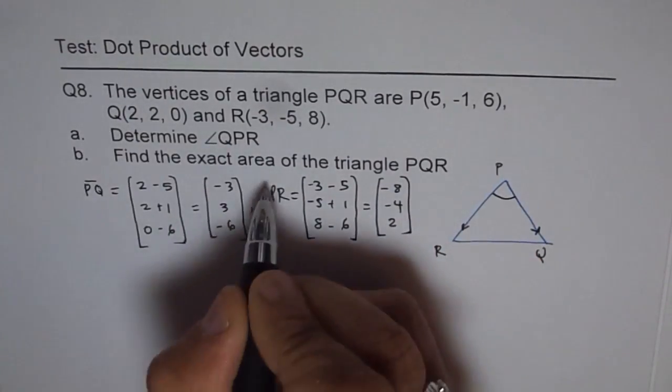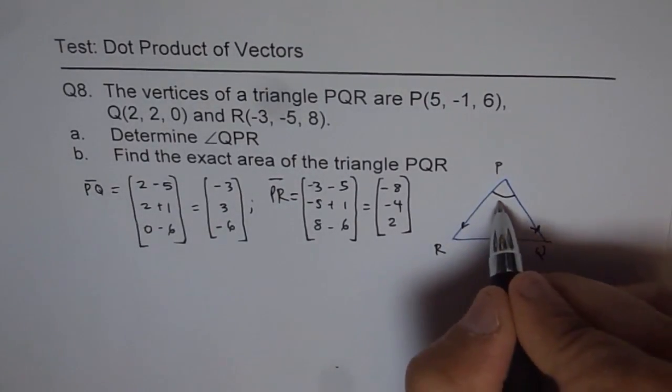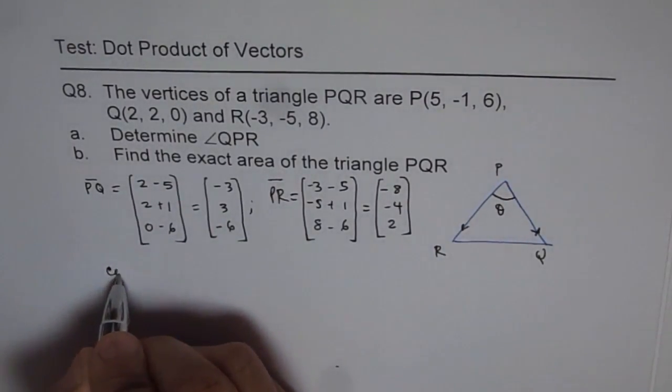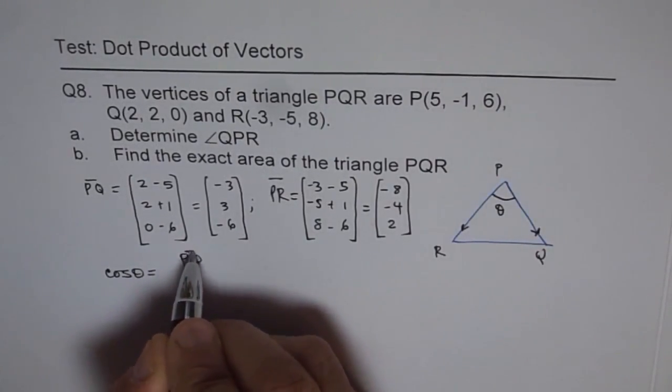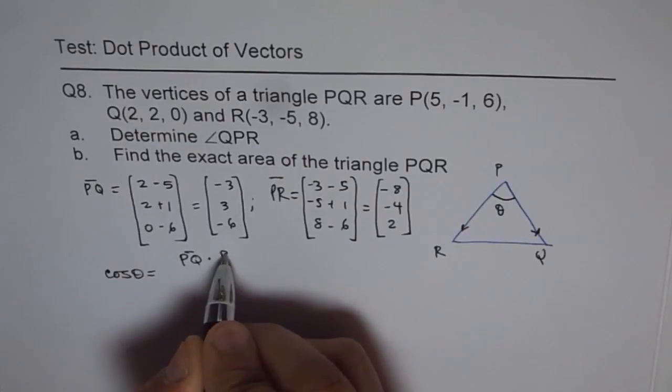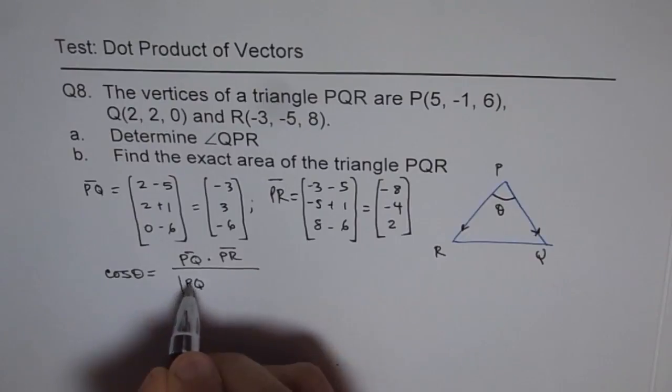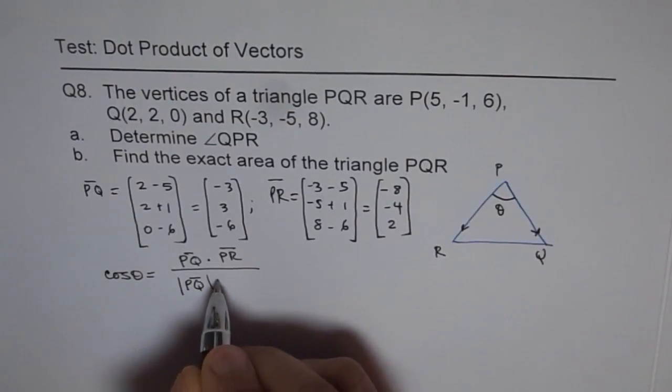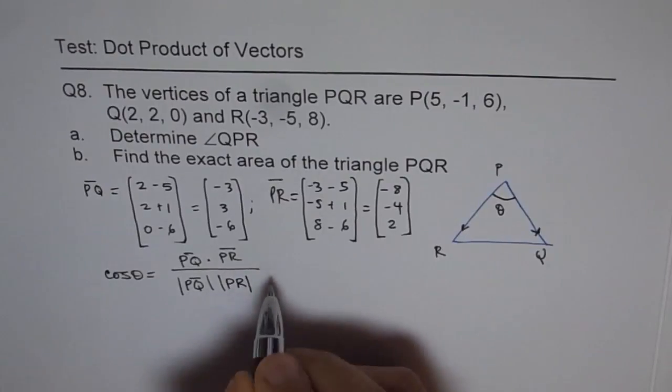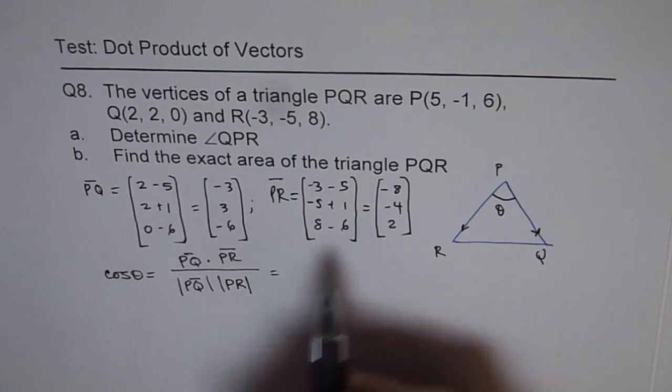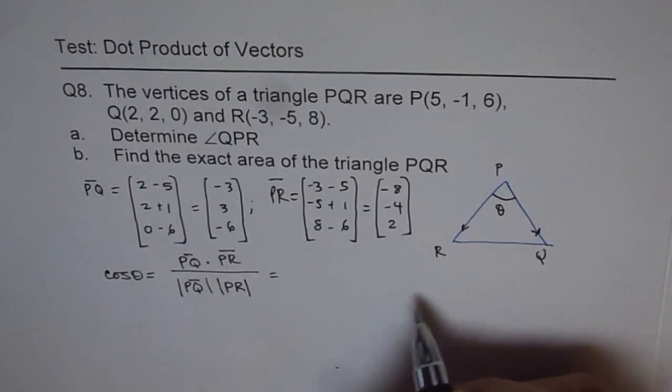That is PR for us. Now the angle between them, let it be theta. In that case, cos theta equals vector PQ dot vector PR divided by magnitude of PQ times magnitude of PR. Let's calculate that dot product separately.